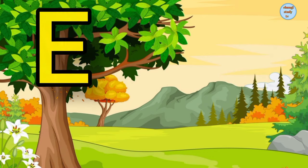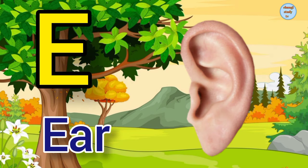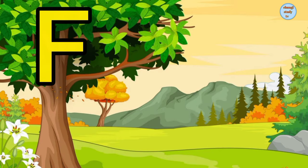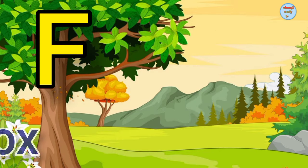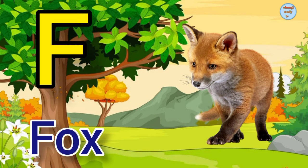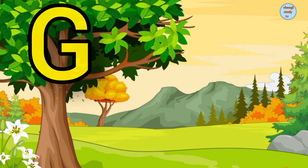E. E for ear, ear means kaan. F. F for fox, fox means lombri.